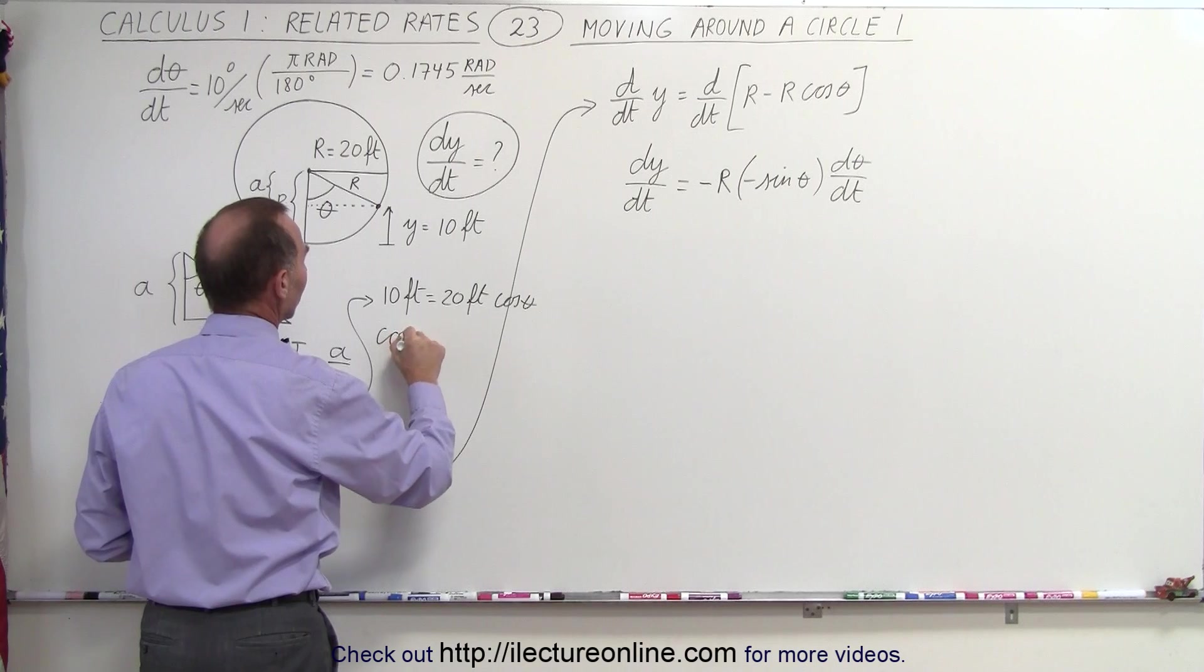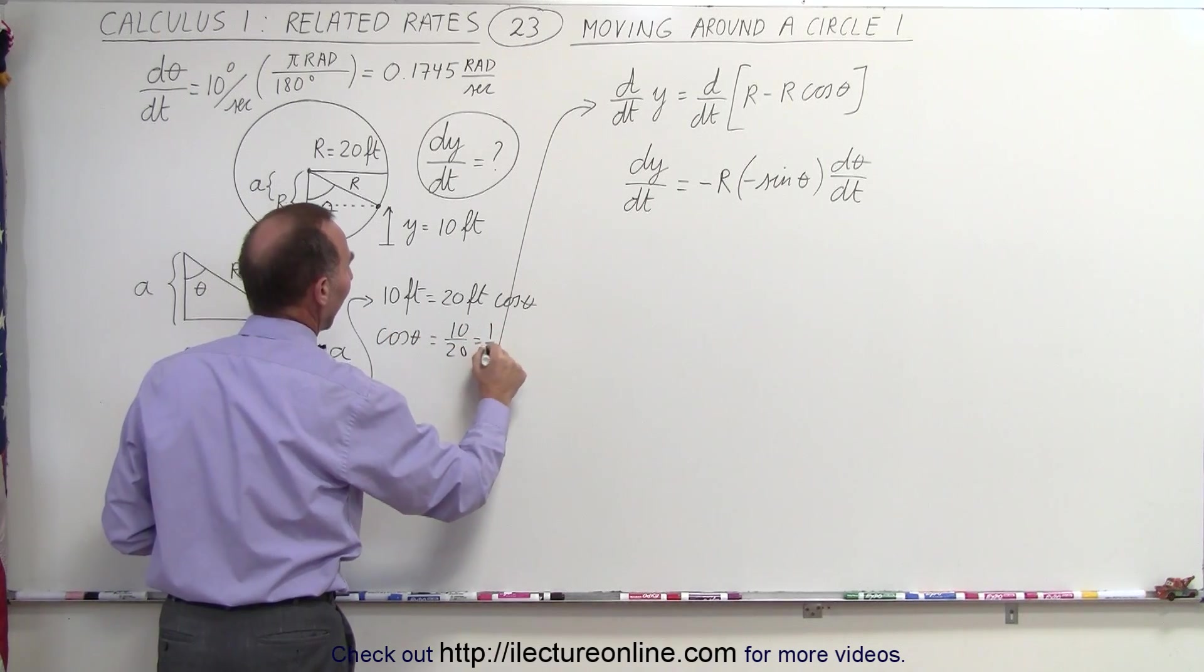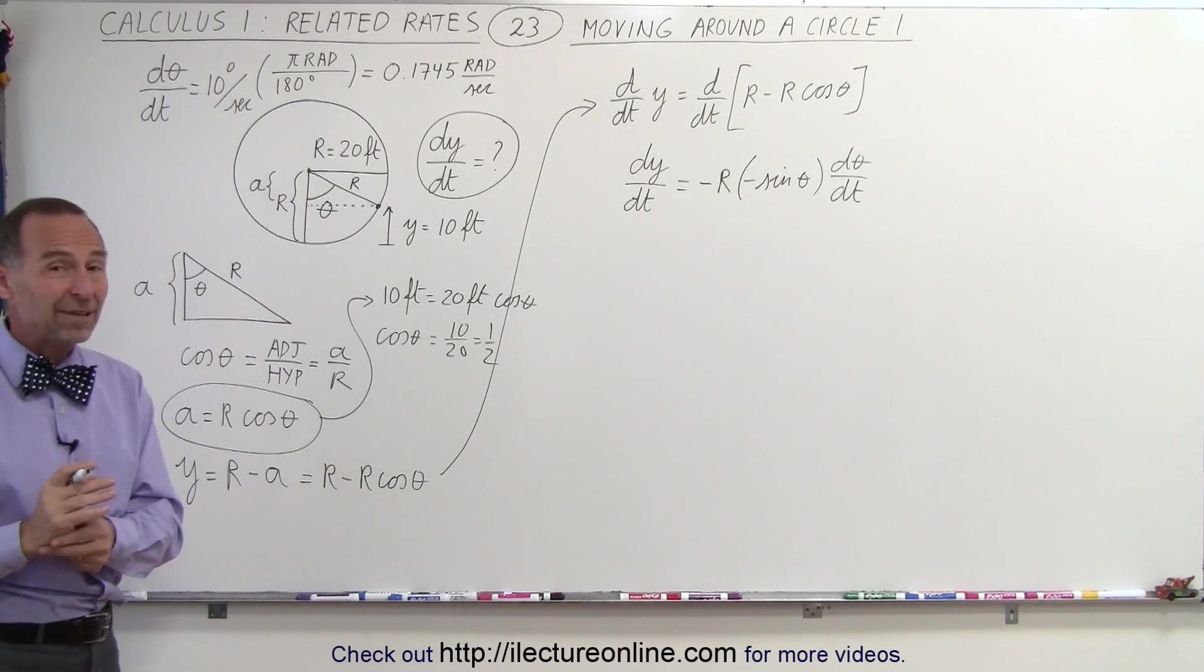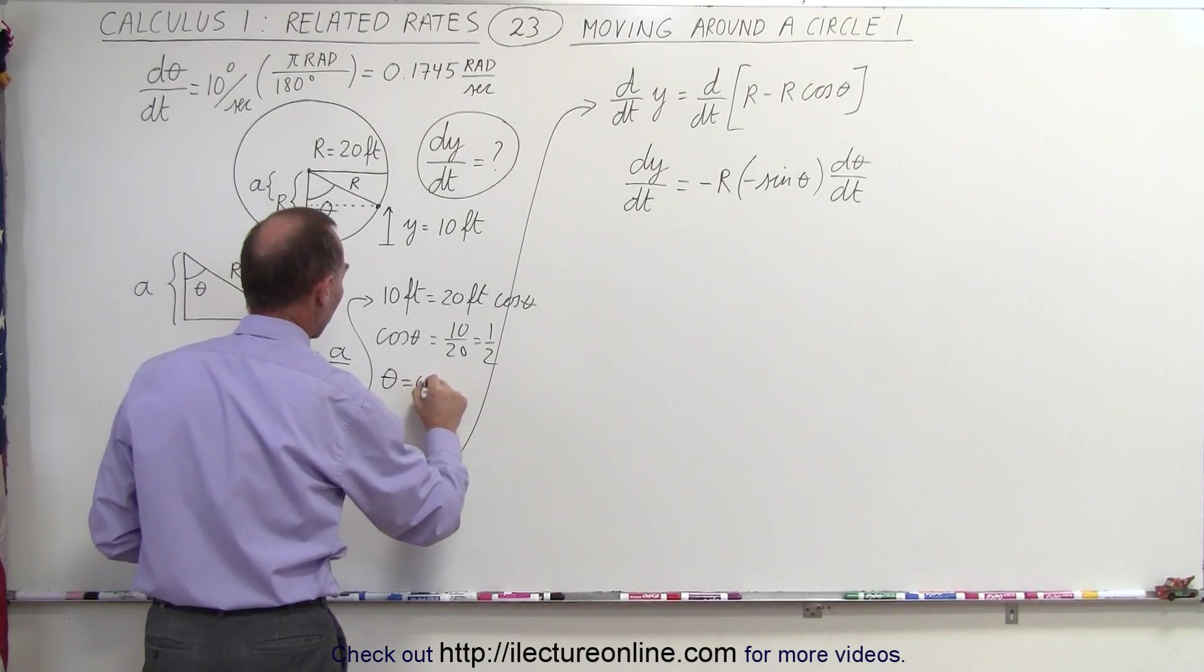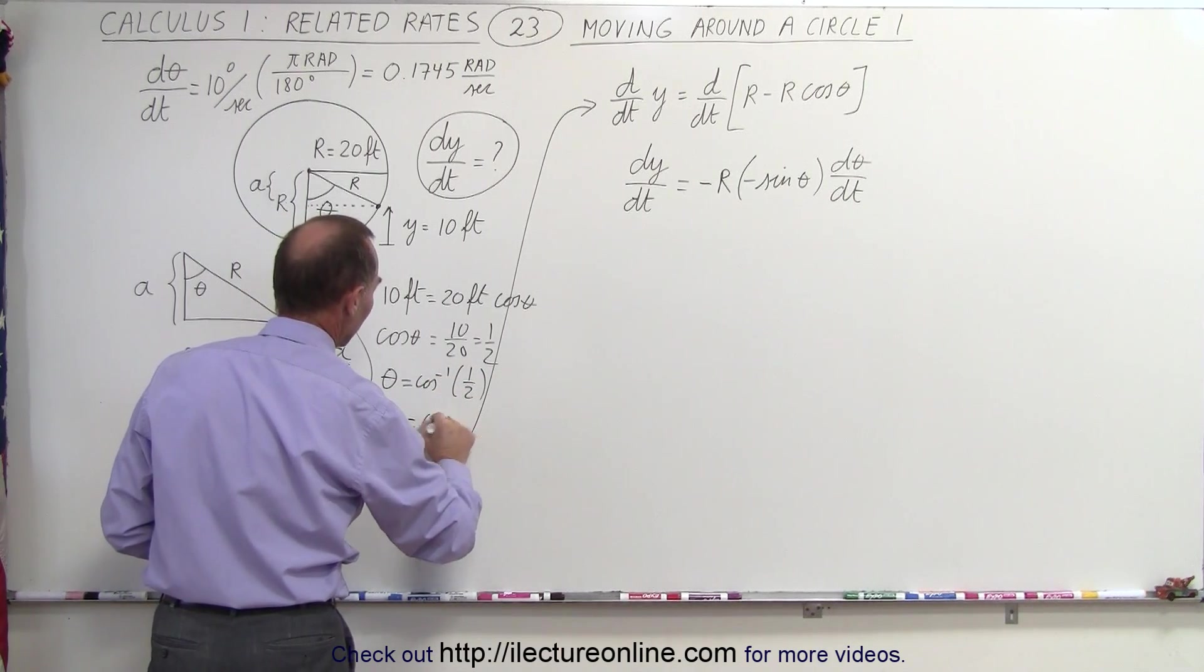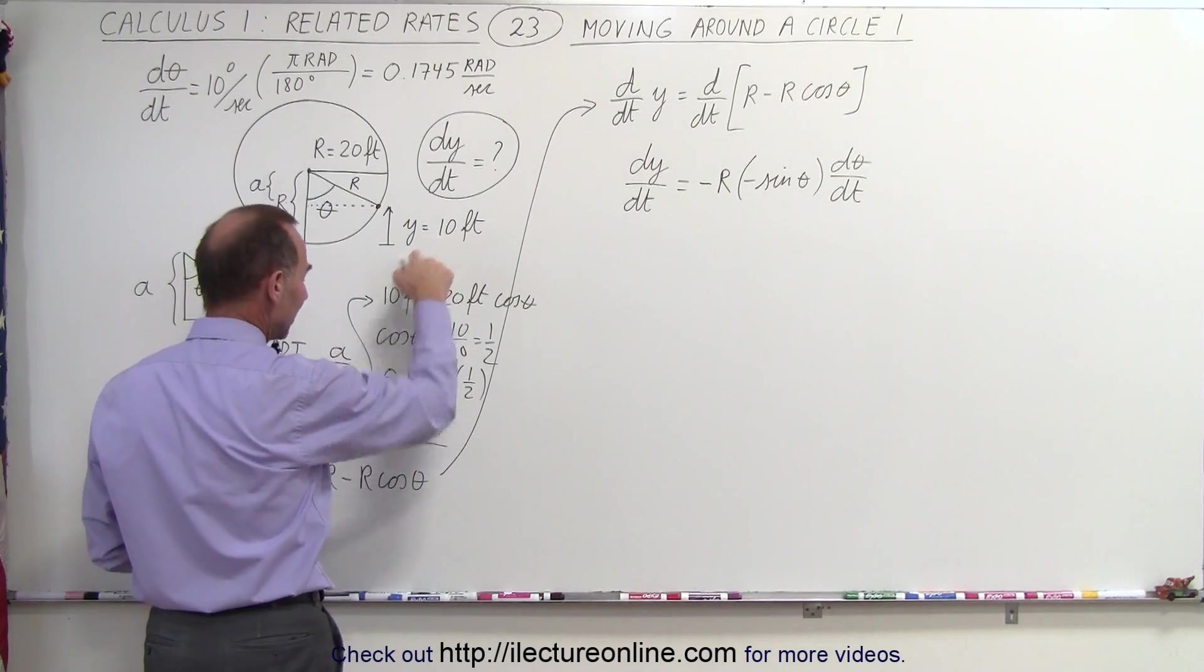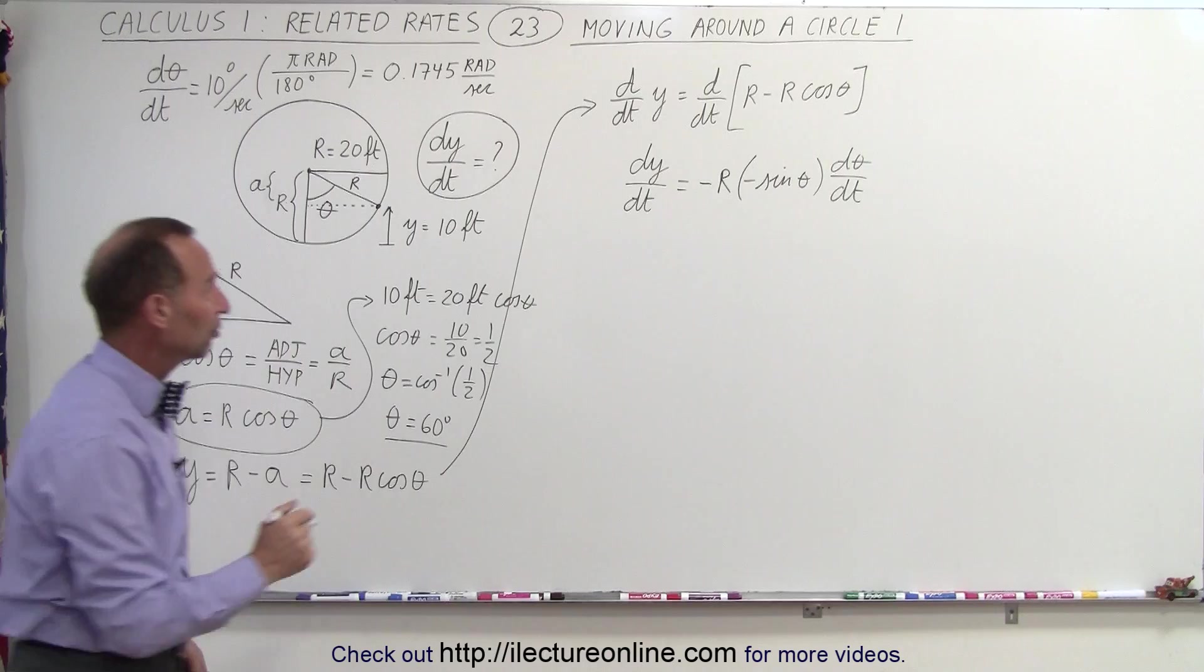Otherwise, the cosine of theta is equal to 10 divided by 20, which is one-half, and of course that means that theta must be equal to the arccosine of one-half, which is equal to 60 degrees. That means that when y is 10 feet, the angle must be 60 degrees. And now we can plug that in our equation.